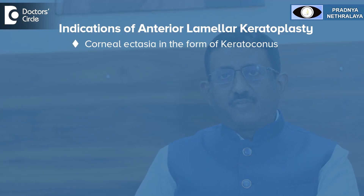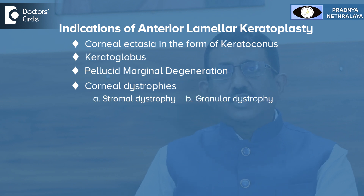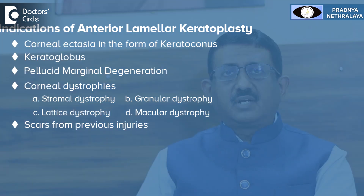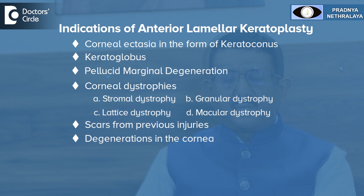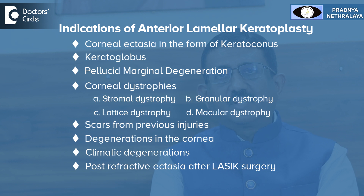Deep anterior lamellar keratoplasty — the next type. What are the indications? Corneal ectasia like keratoconus, keratoglobus, and pellucid marginal degeneration. Corneal dystrophies, or stromal dystrophies like granular dystrophy, lattice dystrophy, or macular dystrophy. Scars from previous injuries which are not full thickness but superficial can have what is called DALK, or deep anterior lamellar keratoplasty. Degenerations in the cornea like Salzmann's nodules or climatic degenerations are also indications for DALK. Post-refractive ectasia after surgery can also be treated with deep anterior lamellar keratoplasty.